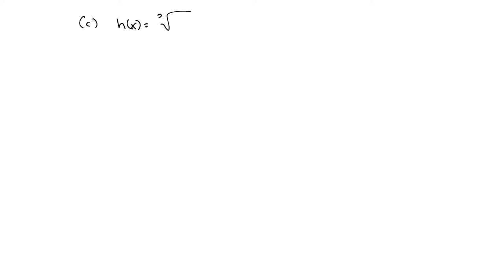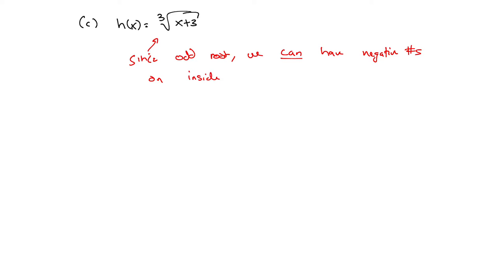Part c: h(x) = ∛(x + 2). Since it's an odd root, we can have negative numbers on the inside. Cube roots, fifth roots, any odd root — you can plug in whatever you want and the radical will produce a real number. So there are no issues, and the domain is (-∞, ∞).